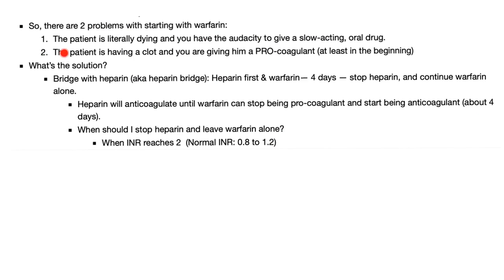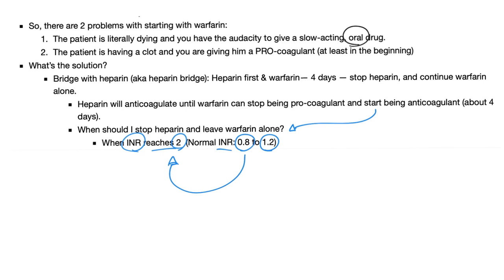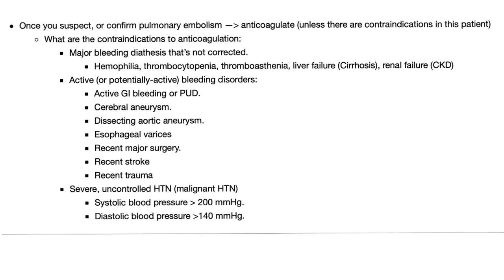What's the problem with starting warfarin first? One, the patient is literally dying and you're giving a slow-acting oral drug. Two, the patient has a clot and warfarin is pro-coagulant at least in the beginning. Bridge with heparin for at least four days, then stop heparin and continue warfarin alone. How do you know warfarin is working as an anticoagulant? Something called the INR. When it reaches 2, stop the heparin and rely on warfarin. Normal INR is 0.8 to 1.2; when it reaches 2, you are anticoagulating.